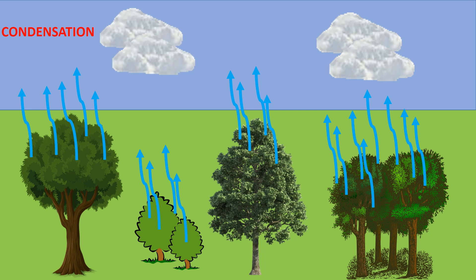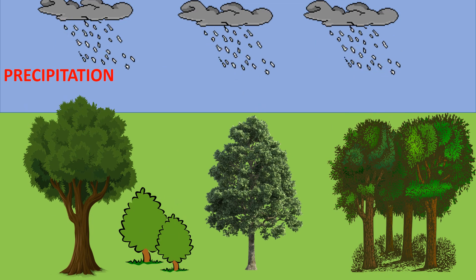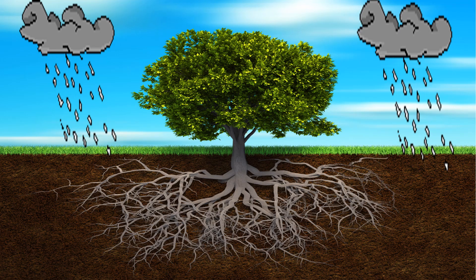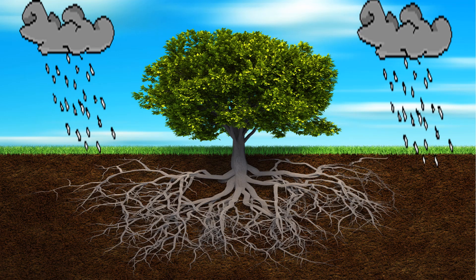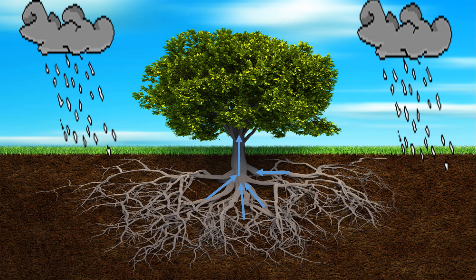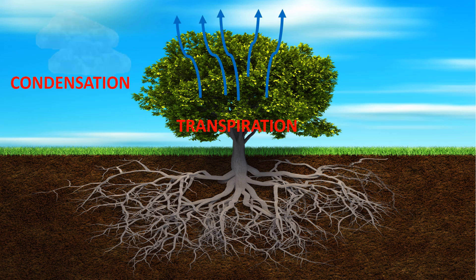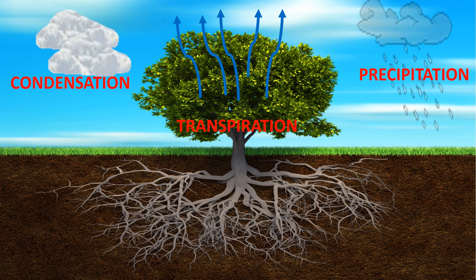Then, precipitation takes place, where the water droplets in the clouds return to the ground in the form of rain. The plant roots absorb water from the ground and pass it to the leaves. Again, the cycle begins — transpiration, condensation and precipitation.